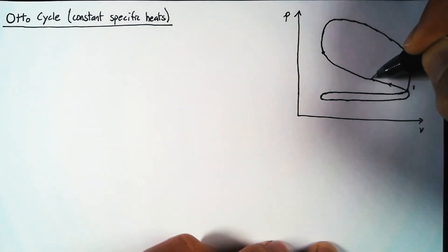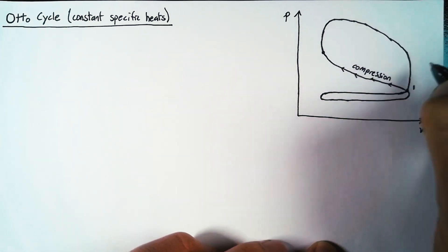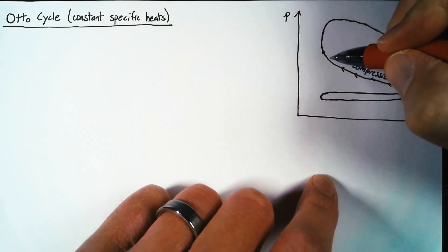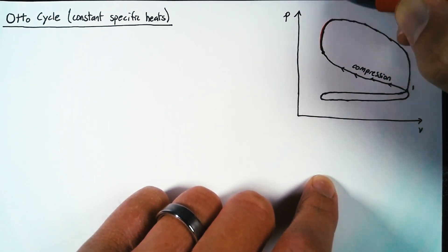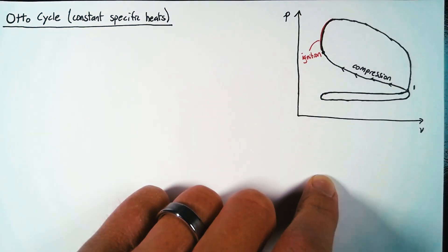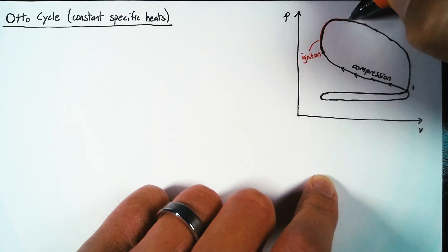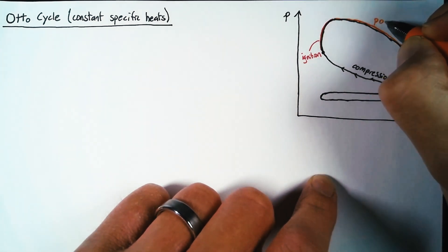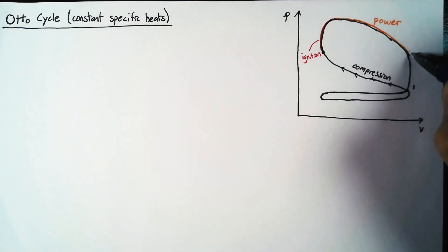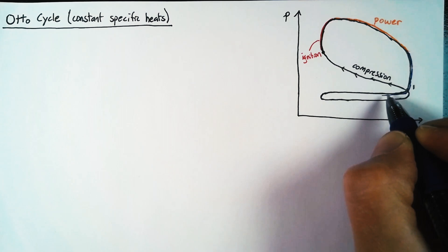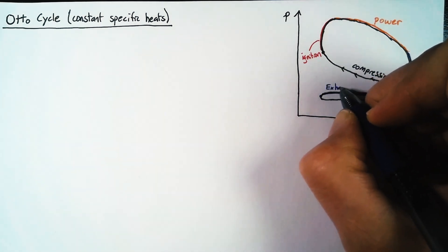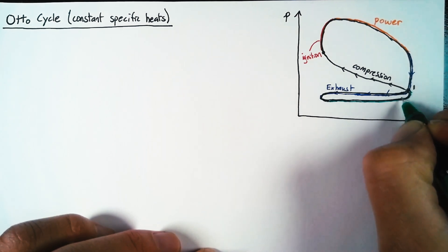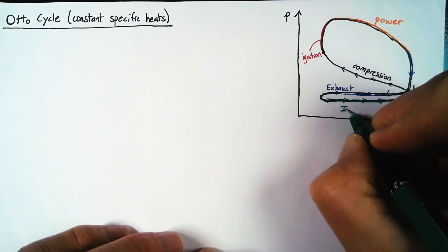Looking at all these pieces: this first part is what we call the compression stroke, where we are doing work on our system and adding energy to our fluid. At the end of the compression stroke, we have ignition, which heats up the fluid and causes a sharp increase in pressure. Then after ignition, we have the power stroke, where we're getting a lot of the energy back out of the fluid as it pushes the piston and expands. At the end of the power stroke, the exhaust valve opens and we start exhausting all of our spent fuel — this is the exhaust stroke. Finally, we finish up with the intake stroke, where we replenish our air and get more oxygen in.